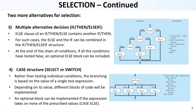In the selection, we actually have two more alternatives. We can have a multiple alternative decision, which has more than just if-else-then statements — we also have else-if statements. The else clause of an if-then-else contains another if-then. This chain of conditions can continue as many else-if statements as needed. At the end of the chain, if all conditions have tested false, an optional else block can be included. In pseudocode: if, else-if, else-if, else, end-if. This is called multiple alternative decision.